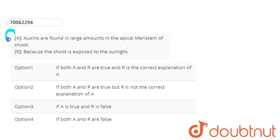Hello students, let's start the question. The question here is based on assertion and reason. The assertion statement is given: Auxins are found in large amounts in apical meristem of the shoot.